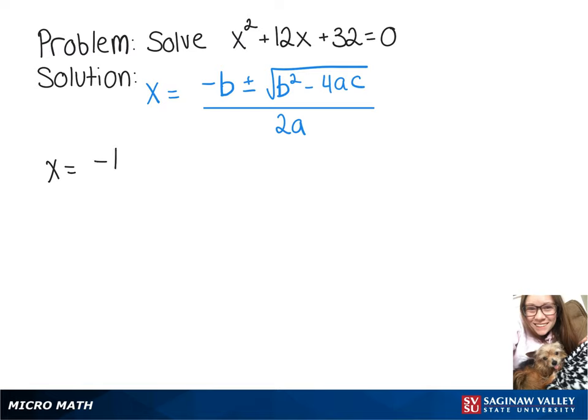So now we're just going to substitute those numbers into our formula, giving us negative 12 plus or minus the square root of 12 squared minus 4 times 1 times 32, all over 2 times 1.